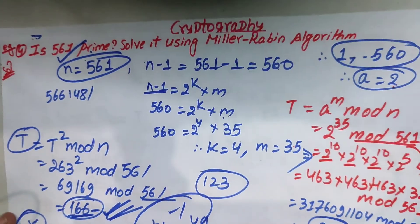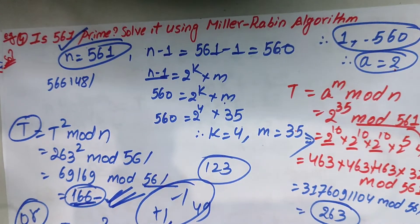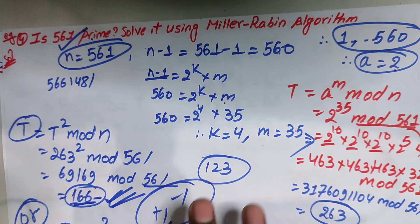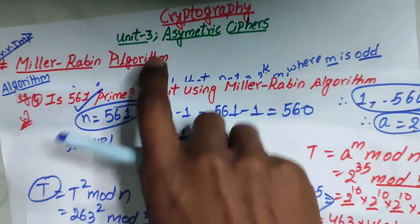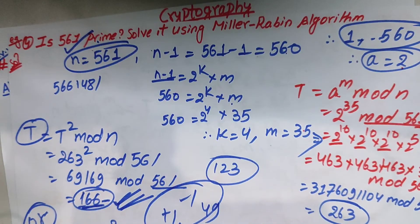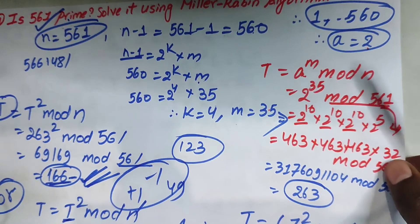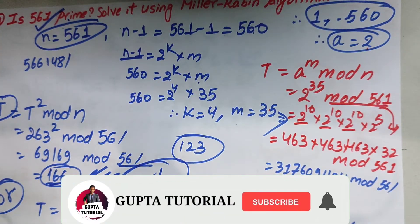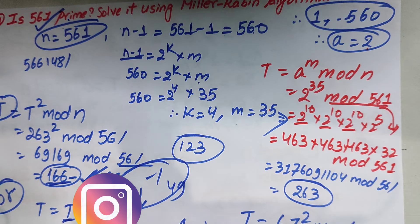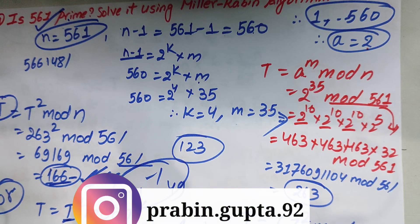So here is the result using the Miller-Rabin algorithm. We are going to get this in Unit 3. Subscribe to the channel, like, share, comment. See you in the next video. Till then, have a good day.